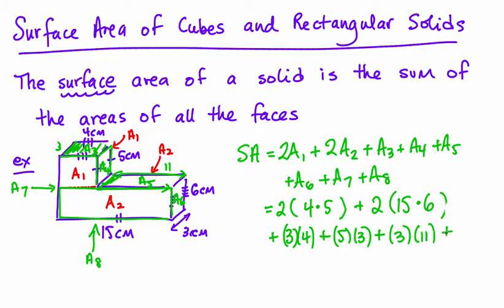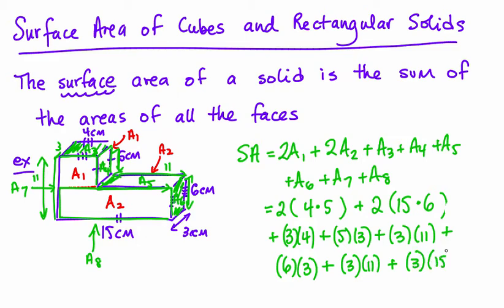And area 6 is this end piece, which is 6 by 3. And then I've got a rectangle that's over on this side, that's 3 by 11. And the reason that it's 11 is there's a 5 and a 6, so the total height this way is 11. And then the last one is the bottom, which is 3 by 15. 15 across this way, 3 across this way.